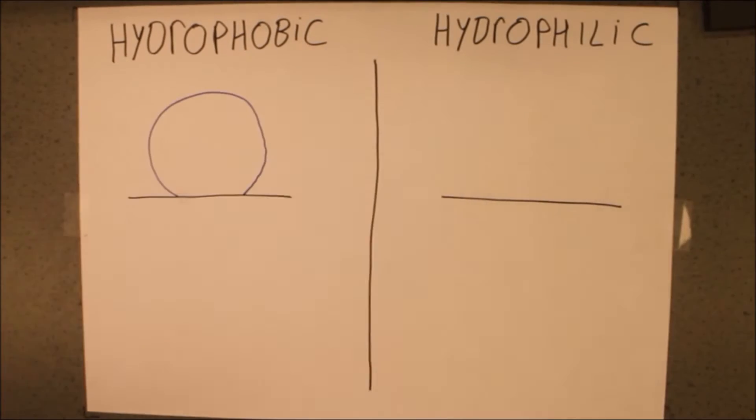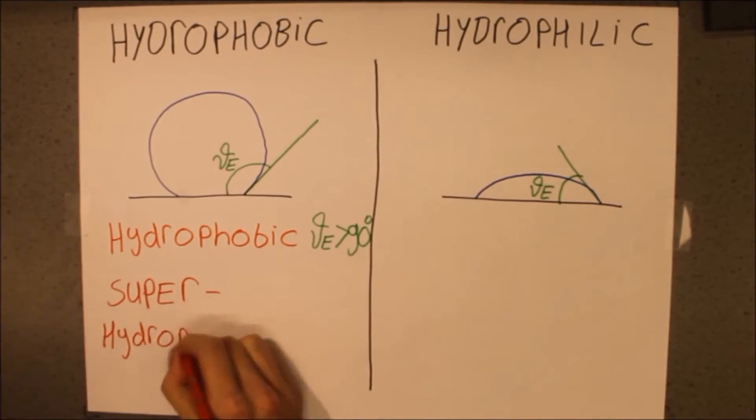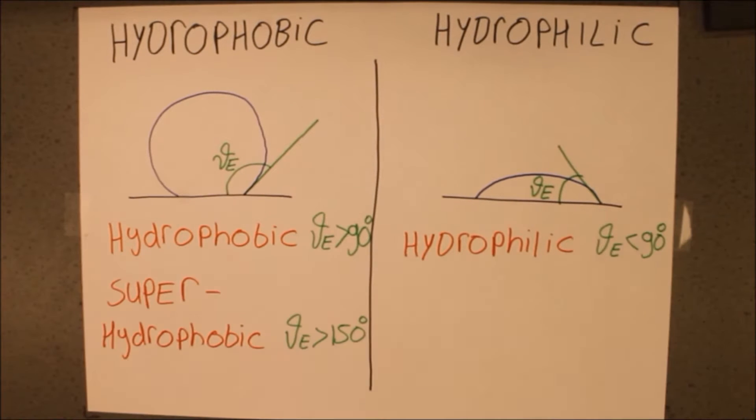Depending on the equilibrium angle between the water droplet and the solid, we call the solid either hydrophobic or hydrophilic. If the equilibrium angle is bigger than 150 degrees, we call the solid superhydrophobic.